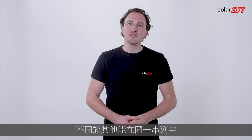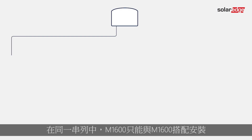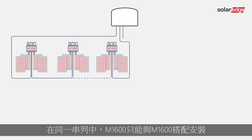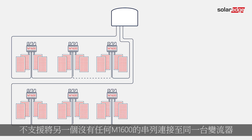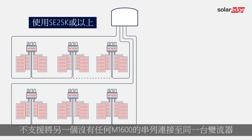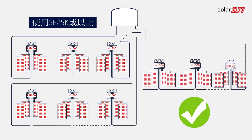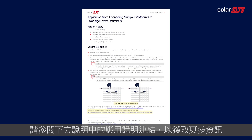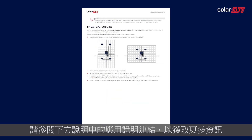Unlike other SolarEdge commercial power optimizers which can be mixed and matched on the same string, the M1600 can only be installed with other M1600 units in the same string. It is not supported to connect another string which doesn't include any M1600s to the same inverter. Find more information in the application note linked in the description below.